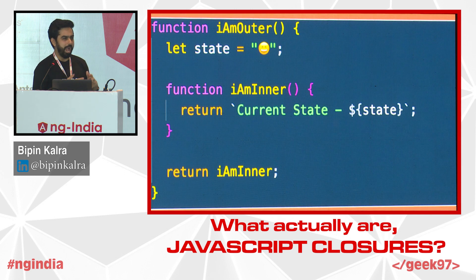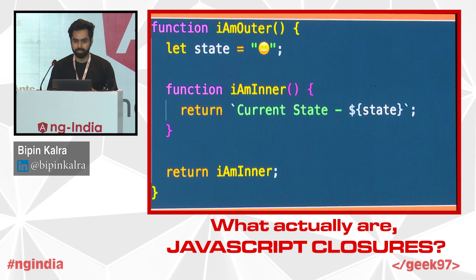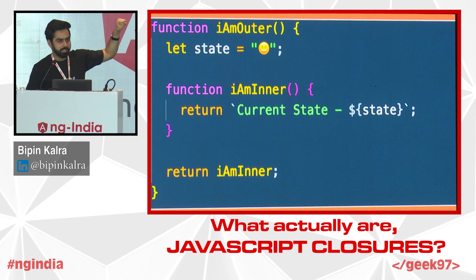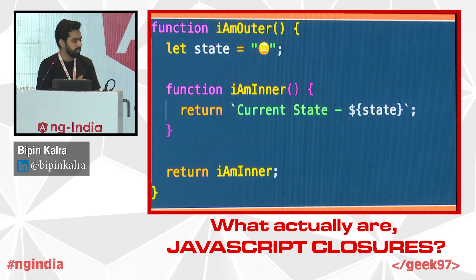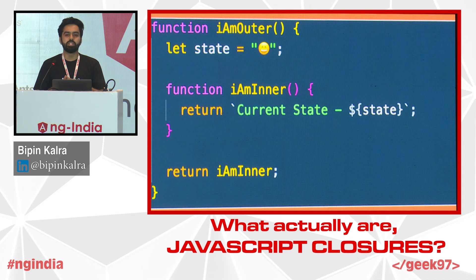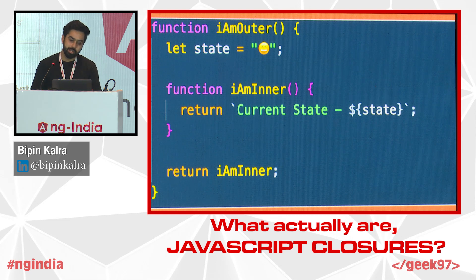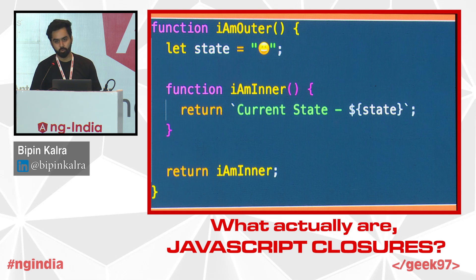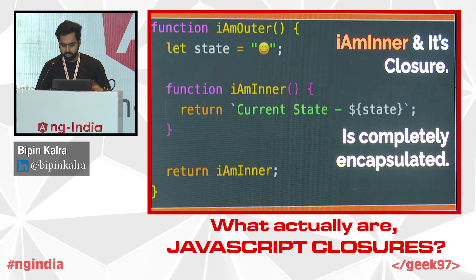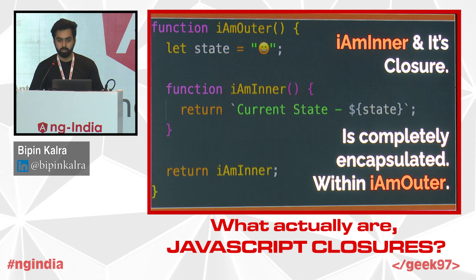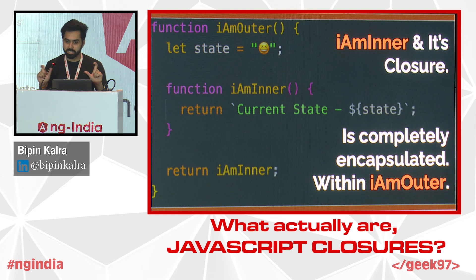Then why do we use closures? I have a simple use case. There's an I-am-inner function and an I-am-outer function. The great thing about this is that if I expose the I-am-outer function, it completely encapsulates everything inside the I-am-inner function and its closure. While I-am-inner has access to everything inside I-am-outer, the vice versa is not true. So data encapsulation is a major feature where we use JavaScript closures. There are tons of other examples, but I only have 15 minutes to cover what JavaScript closures are.